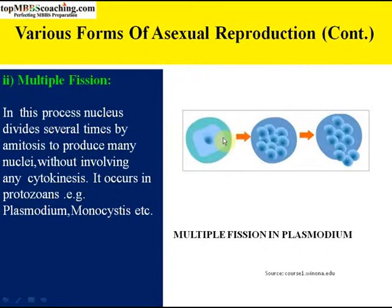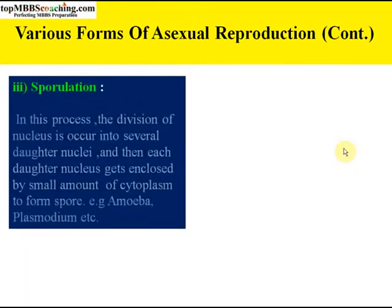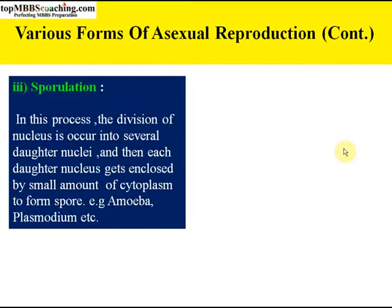In Plasmodium — the malaria parasite — multiple fission is known as schizogony or sporulation. In sporulation, the nucleus divides into several daughter nuclei, and each daughter nucleus gets enclosed by a small amount of cytoplasm to form a spore. This also happens in amoeba, Plasmodium, etc.